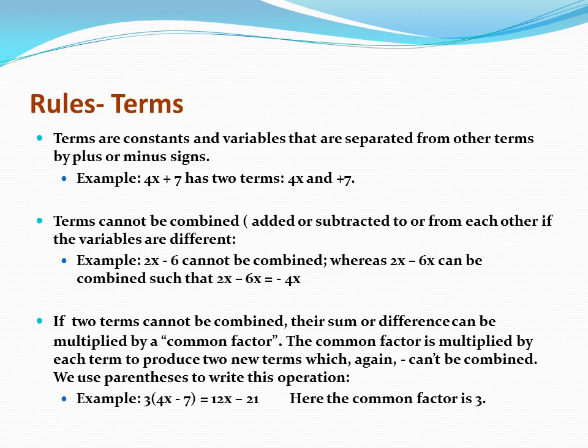Terms are constants and variables that are separated from other terms by plus or minus signs. For example, 4x + 7 has two terms: 4x and 7. Terms can be combined if the variables are the same. If two terms cannot be combined, the sum can be multiplied by a common factor. If the common factor is multiplied by each term, we use parentheses to write this operation. For example, 3 times (4x - 7) equals 12x - 21, with the common factor being 3.